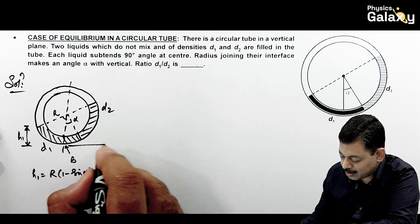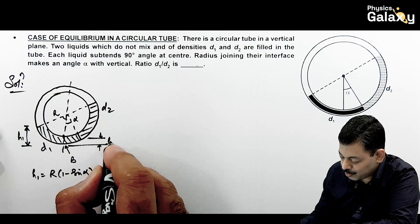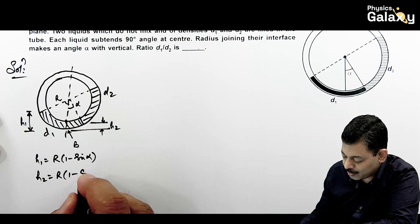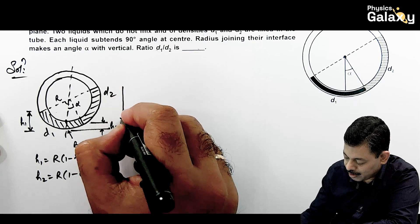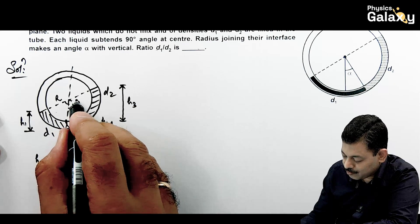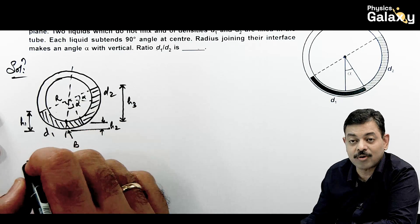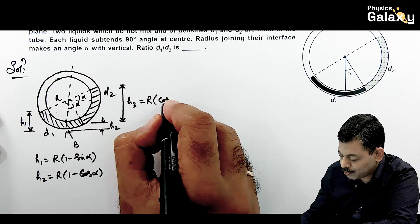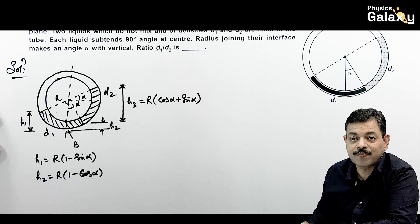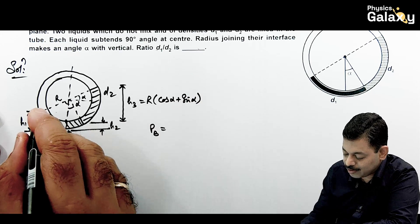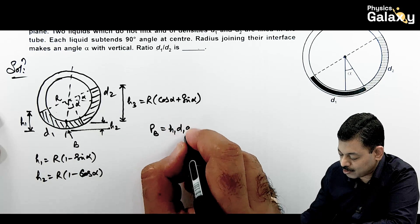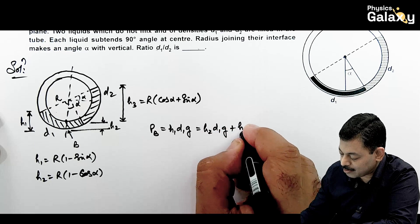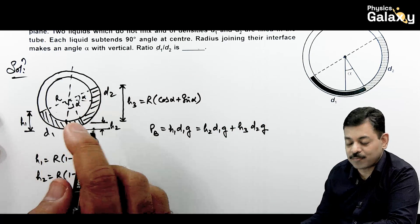On the other side, h2 = R - R·cos α = R(1 - cos α). The height h3 is R·cos α + R·sin α = R(cos α + sin α). At the bottom point, pressure from the left is h1·d1·g, and from the right it is h2·d1·g + h3·d2·g. Setting left equal to right and cancelling g, we substitute the height values.